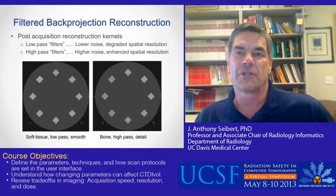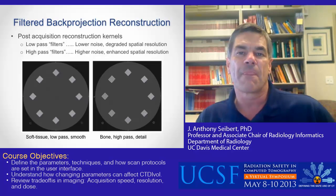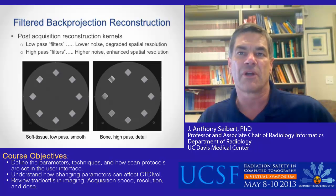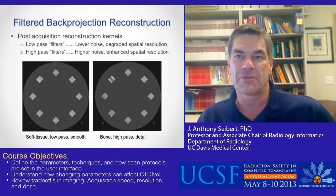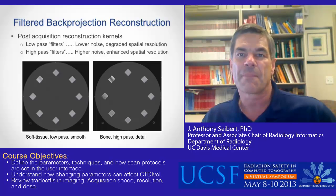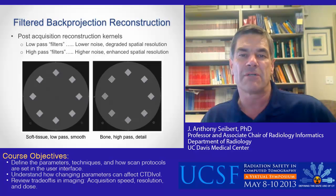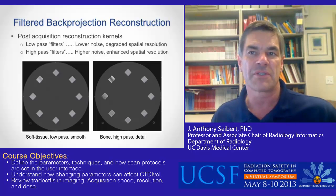Reconstruction filter kernels do not directly affect dose, but spatial and contrast resolution are both affected. A low-pass smoothing filter creates an image with less noise and improved contrast resolution of large objects, but a loss of detail, as shown by a high-resolution detail phantom. A high-pass detail filter provides enhanced spatial resolution, but greater emphasis of noise and less contrast-to-noise ratio.